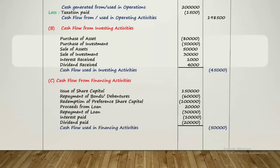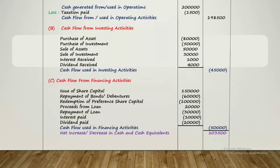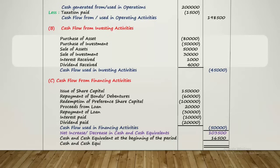Now that we have cash flow from all three activities, we add and subtract their totals as per their sign, and the result is written as 'net increase or decrease in cash and cash equivalents.' If positive, it is 'net increase'; if negative, 'net decrease.' For exam purposes, there is one more step: add the opening balance of cash and bank balances to the net increase or decrease. The result should equal the closing balance of cash and cash equivalents given in the question, which also confirms the correctness of the statement.